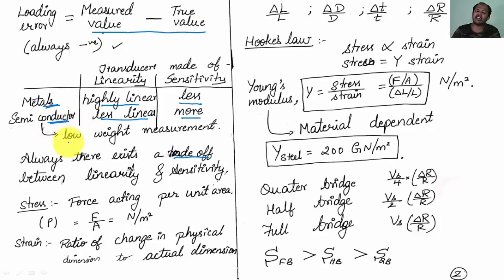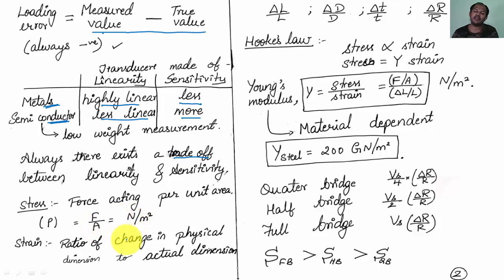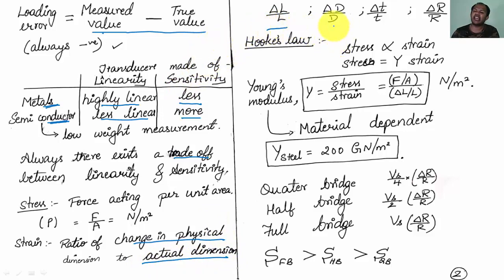Stress is defined as force acting per unit area: stress (rho) equals force divided by area. The unit of force is Newton, the unit of area is meter squared, so the unit of stress is Newtons per meter square. Strain is the ratio of change in physical dimension to actual dimension — for example, change in length divided by actual length, change in thickness divided by actual thickness, or change in resistance divided by actual resistance.